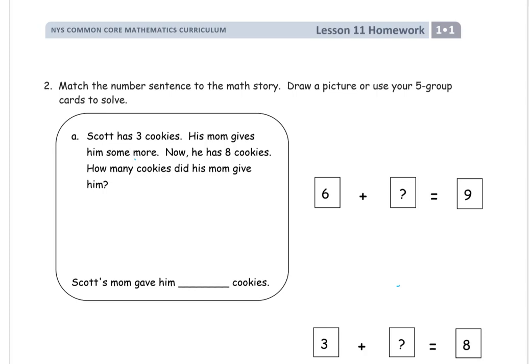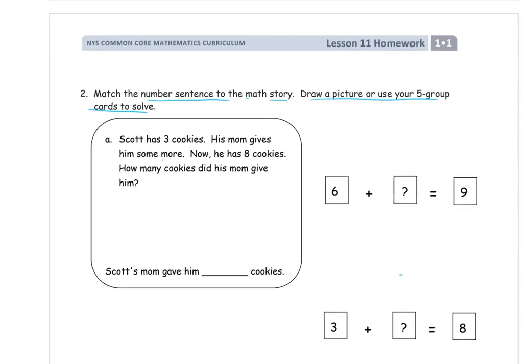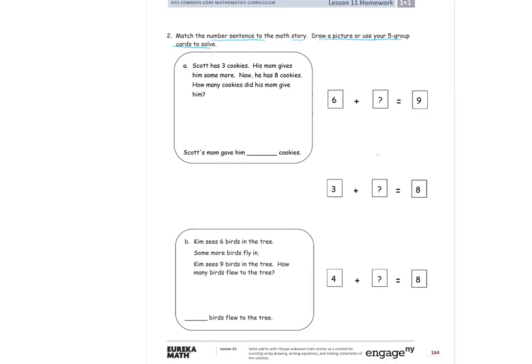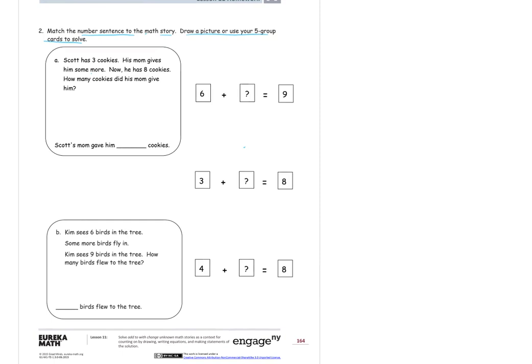Now, this one, we have match the number sentence to the math story and draw a picture or use your five group cards to solve. So, really, I'm going to have to zoom out to show you the whole page here. And you can see what we have is match the number sentence to the math story. We have three different number sentences here. And when we're done, we're going to match them up to this. We have two stories. And we're going to just draw a line and match up which number sentence goes to which story.